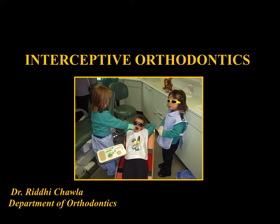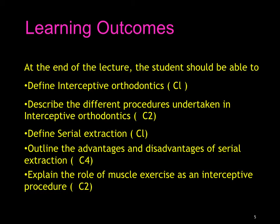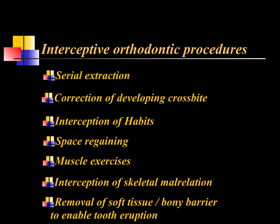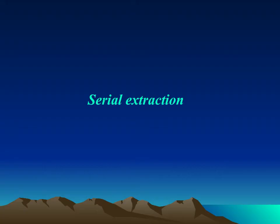At the end of this lecture you should be able to define interceptive orthodontics, identify the different procedures under it, and understand serial extraction in detail — its advantages, disadvantages, types, and muscle exercises. The definition: interceptive orthodontics involves procedures undertaken at an early stage of malocclusion to eliminate or minimize its severity. There are broadly seven procedures which come under interceptive orthodontics.